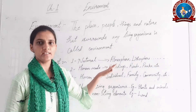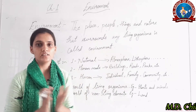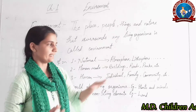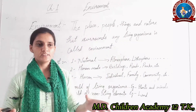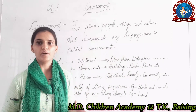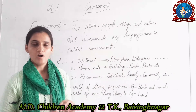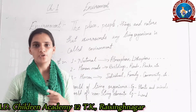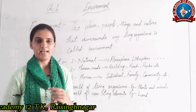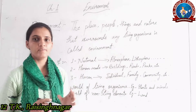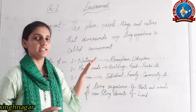Atmosphere is the blanket of air that surrounds the earth. Lithosphere is the land part of the earth. Hydrosphere includes all water bodies including oceans, ponds, lakes, and rivers. Biosphere is where all living beings interact — we will study biosphere in detail in the next topic.